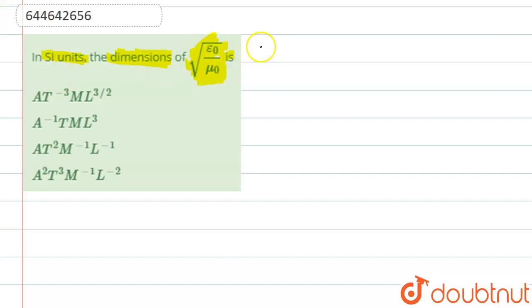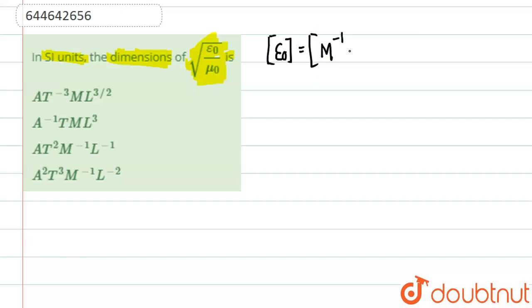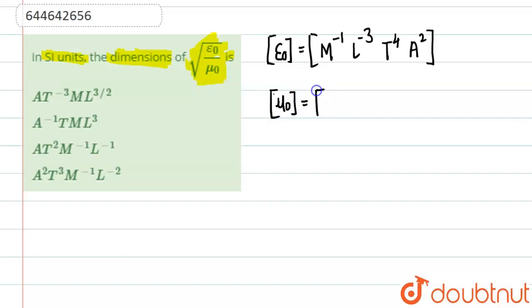First, we will write the dimensions of epsilon naught and mu naught. The dimension of epsilon naught is M minus one, L minus three, T four, A squared. And the dimension of mu naught is M one, L one, T minus two, A minus two.